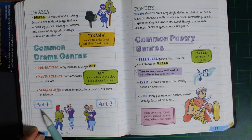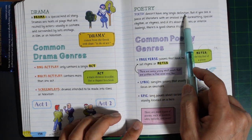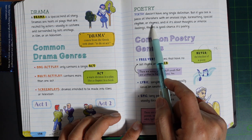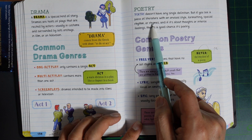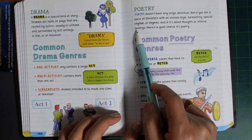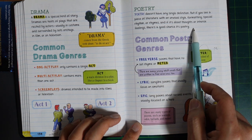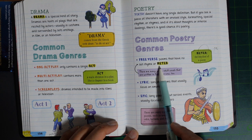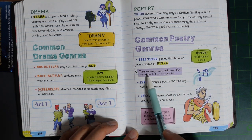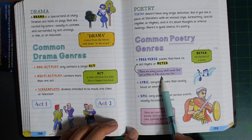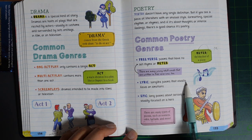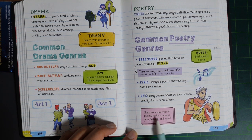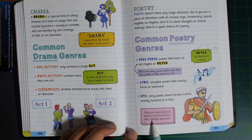Poetry. Poetry doesn't have any single definition, but if you see a piece of literature with unusual style, formatting, special rhythm or rhymes, and if it's about a thought or intense feeling, there's a good chance it's poetry. Common poetry genres: Free verse—poems that have no set rhyme or meter. There are many young adult novels that are written in free verse. Lyric—song-like poems that usually focus on emotions. Epic—long poem about a serious event, usually focused on a hero. There are many types of poems such as sonnets, odes, ballads, and more.